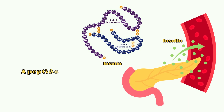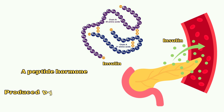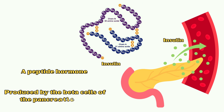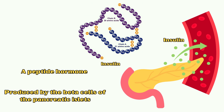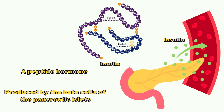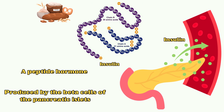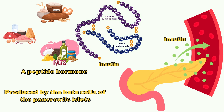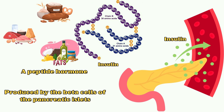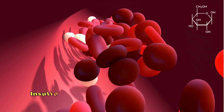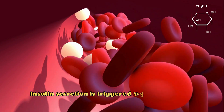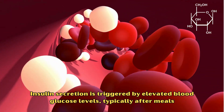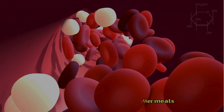Insulin is a peptide hormone produced by the beta cells of the pancreatic islets. It plays a crucial role in regulating carbohydrate, fat, and protein metabolism in the body. Insulin secretion is triggered by elevated blood glucose levels, typically after meals.